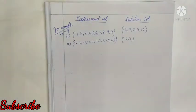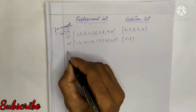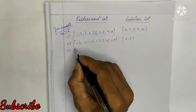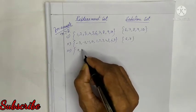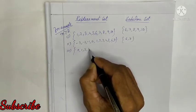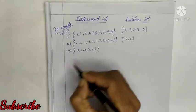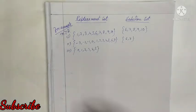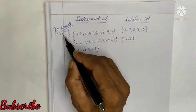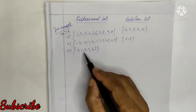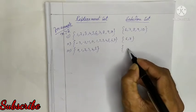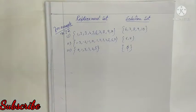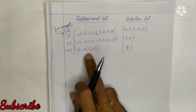Similarly, if the replacement set is {0, 1, 2, 3, 4, 5} and the condition is X greater than 5, there is no value in the set greater than 5, so the solution set is empty. Always remember: the solution set depends on the replacement set.